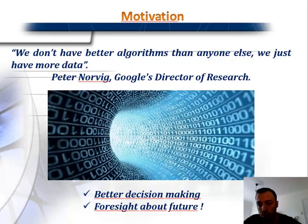Peter Norvig, Google's Director of Research, said: 'We don't have better algorithms than anyone else, we just have more data.' This inspired statement shows that having more data is directly related to better decision making and having foresight about the future.